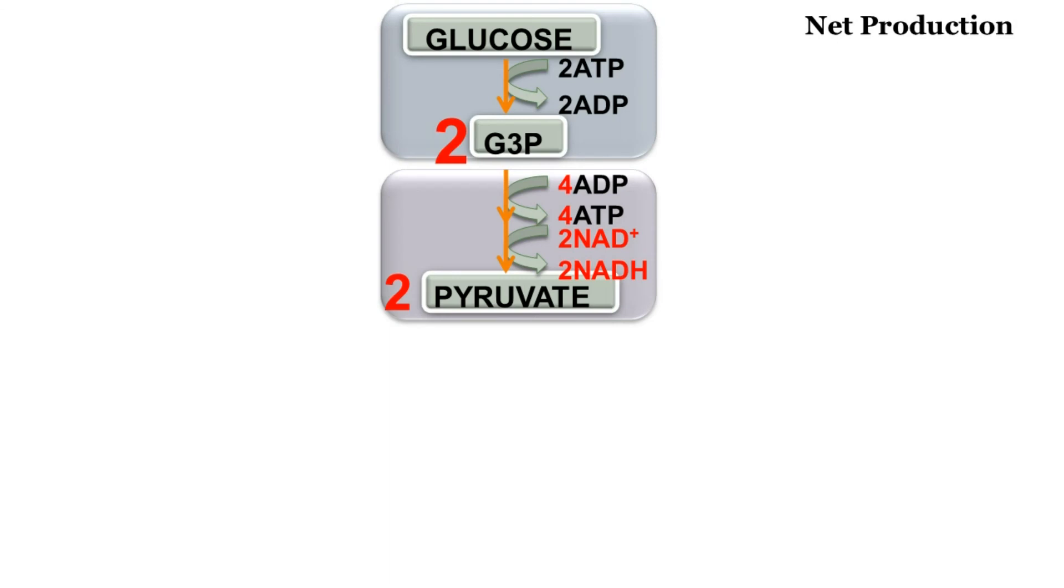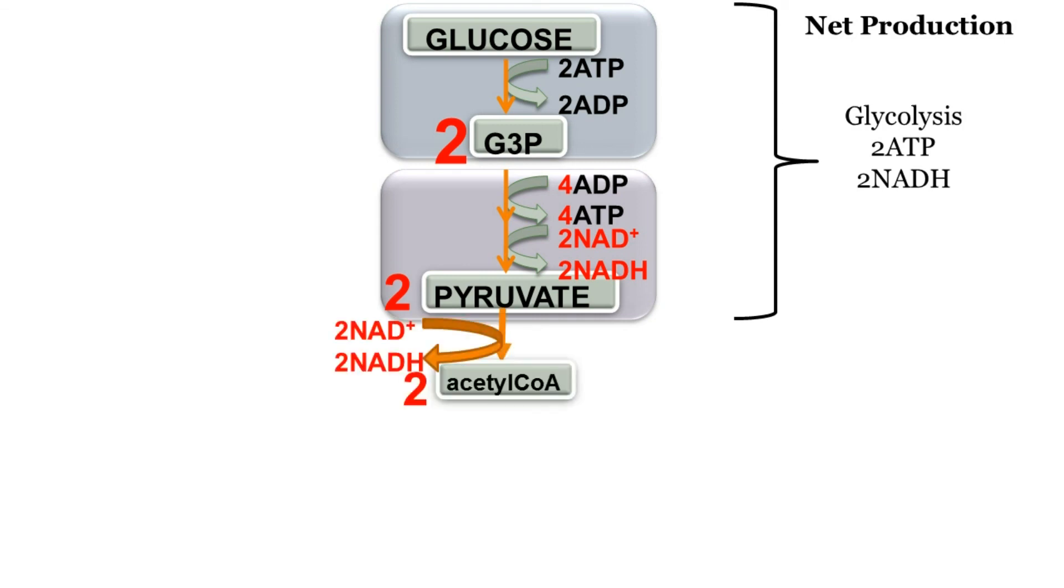Let's look at the net production so far. Do remember, this is per one glucose molecule. From glycolysis, the net production is 2 ATP and 2 NADH. Going from pyruvate to acetyl-CoA gives 2 NADH.